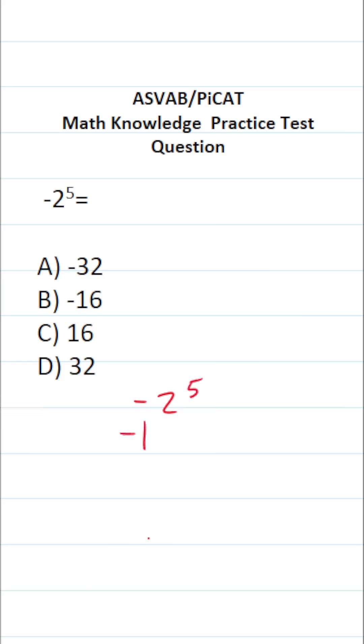This is the same thing as negative one times two to the fifth. In other words, it looks like this. Negative one times what is two to the fifth? That's two multiplied by itself five times. So let's go ahead and work this out.